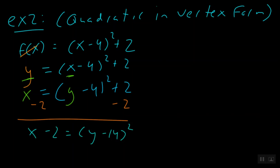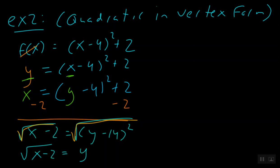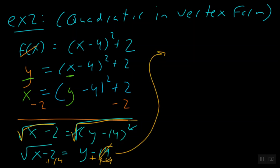From here, let's do everything we can to get y by itself. We get rid of our addition or subtraction first, always and forever. So we have x minus 2 is equal to y minus 4 squared. How do you get rid of a square? The inverse of a square is a square root. So now we have the square root of x minus 2 is equal to y minus 4, because the square root and the square cancel. Our final step is to add 4 to both sides.